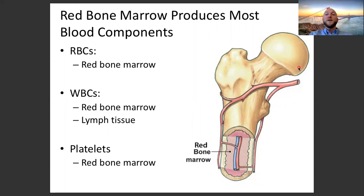Hello everybody, and welcome back to BioSC 140 Human Physiology. This is the S3P1 video, part two. We're going to cover how blood cells are created — where do they come from? This is an important question for a number of reasons; it definitely has a lot of healthcare implications, as there are many healthcare issues related to the production of blood cells.